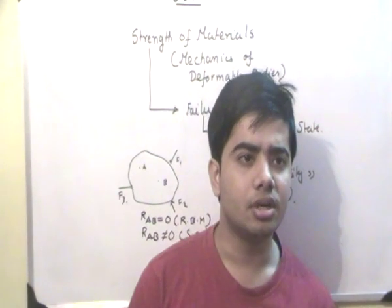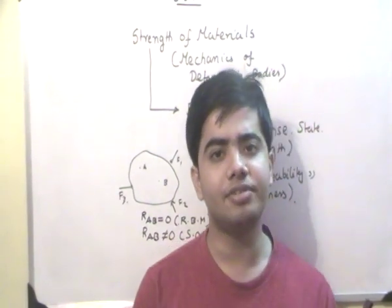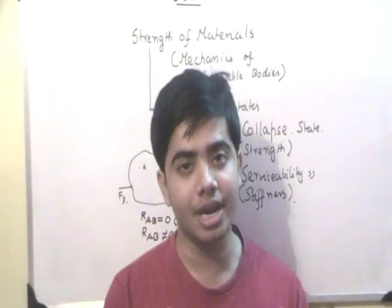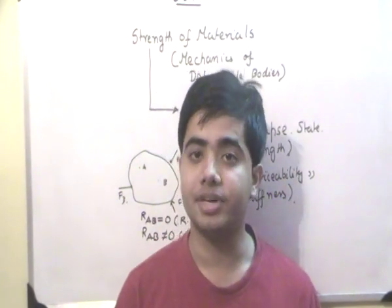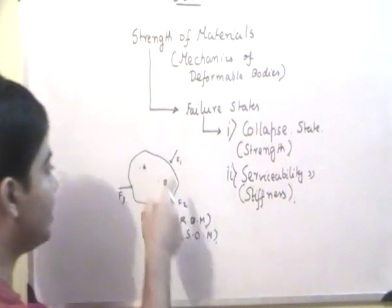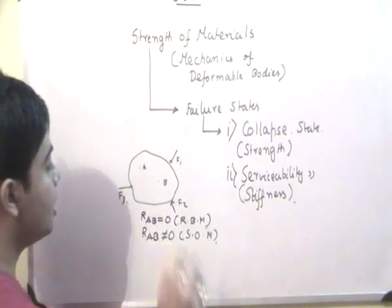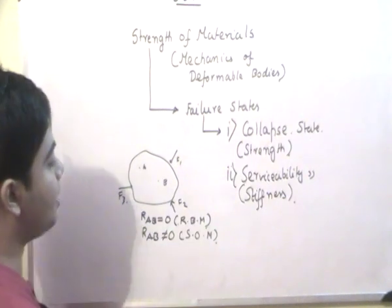In rigid body mechanics, we assume that relative displacement between two points within a rigid body or within a body is equal to zero if it is acted by forces. For example, this is a rigid body and A and B are two points and F1, F2, F3 are the forces. So relative displacement between A and B is equal to zero if we consider it as a rigid body or RBM.